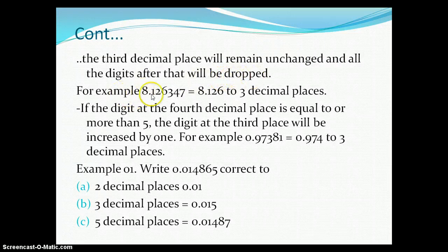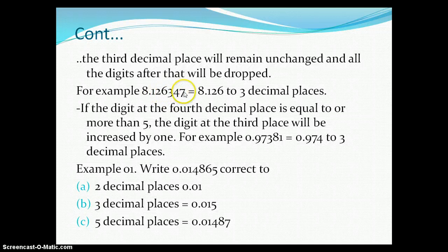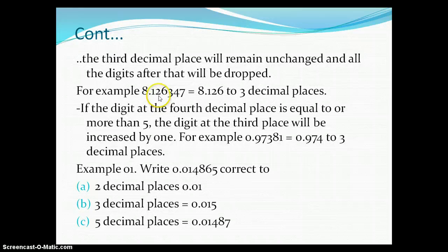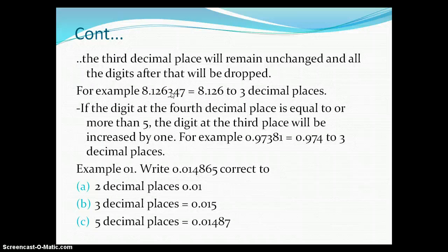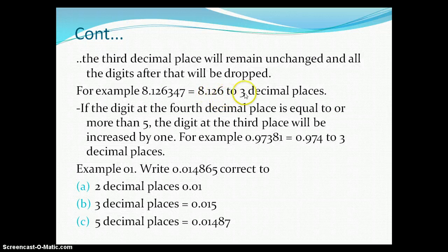Take the example 8.126347 — here we have six decimal places. You are required to write this number to three decimal places. You consider the fourth digit: one, two, three, four — so three is the fourth digit. Since three is below five, the third decimal place remains unchanged and the fourth, fifth, and sixth digits are dropped. So you get 8.126, which is three decimal places. That is the first case.